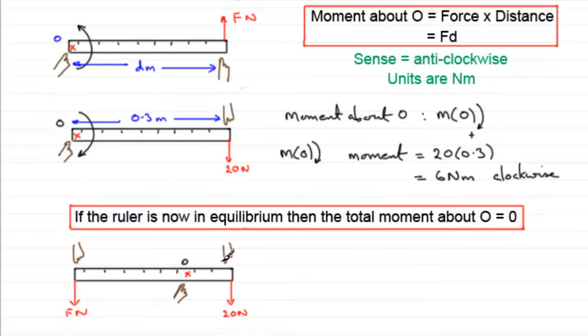So let's just put some distances in. Let's just suppose that the distance from the 20 newtons to this point here is 10 centimeters or 0.1 meters. And let's say that this other distance here is the remaining 0.2 meters.